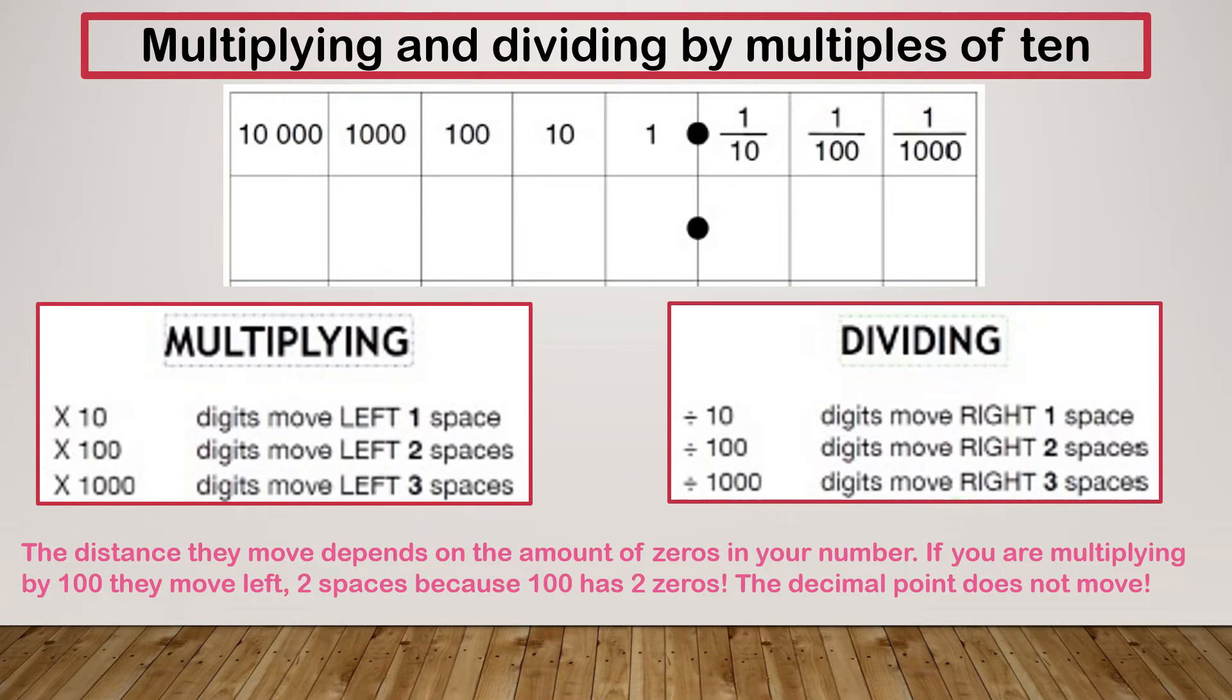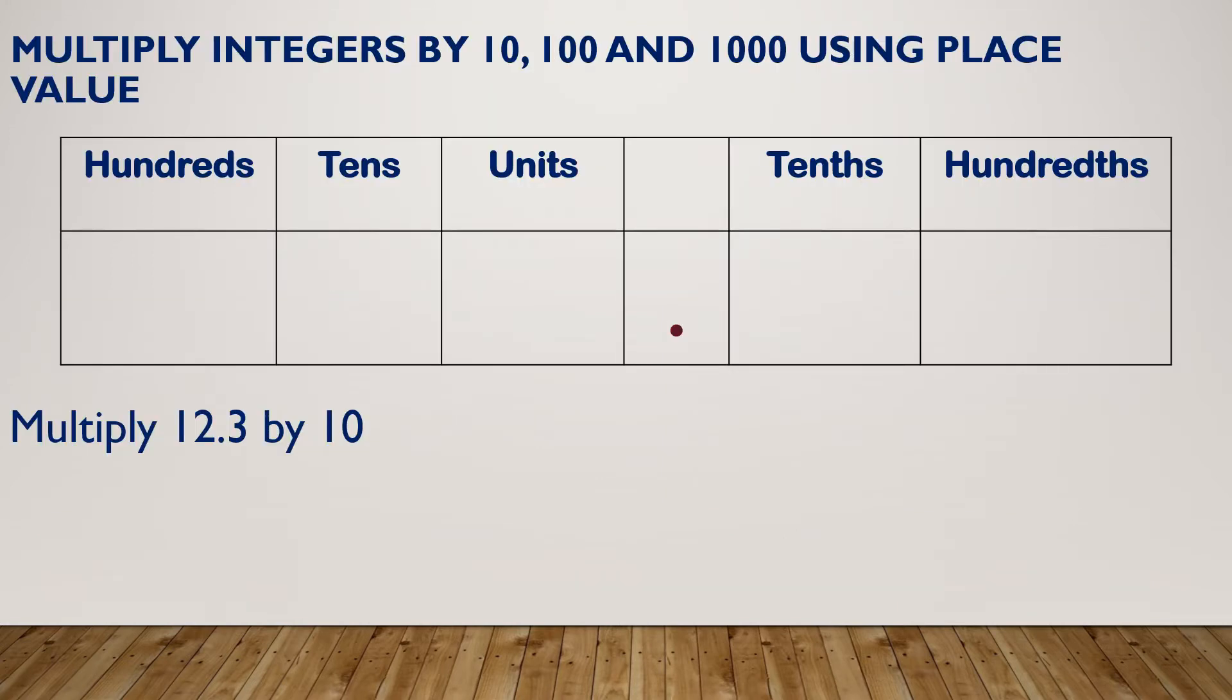So let's have a look at some examples. So if I wanted to multiply 12.3 by 10. So my 12.3, I've got 1 ten, 2 units, and 3 tenths. So if I'm multiplying by 10, don't forget, multiplying was moving all of my digits to the left, and they were moving by the amount of zeros. So I'm multiplying, I'm moving everything 1 space to the left.